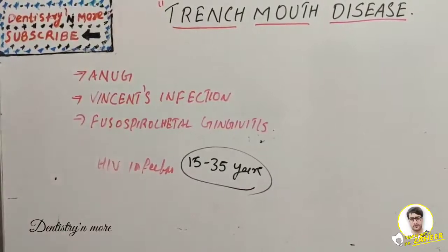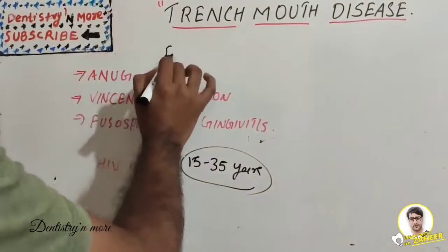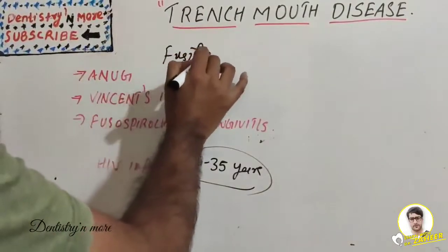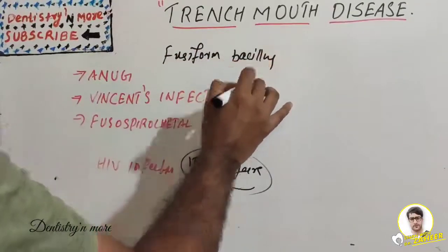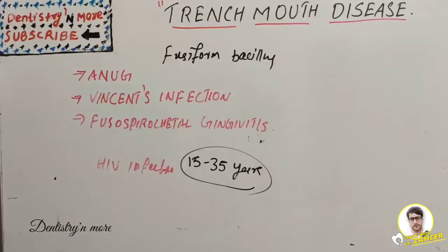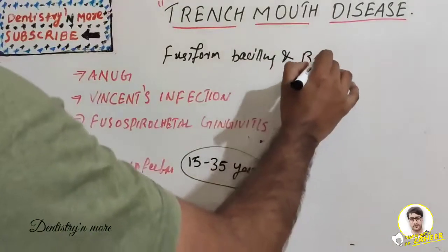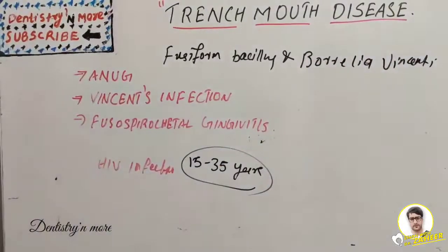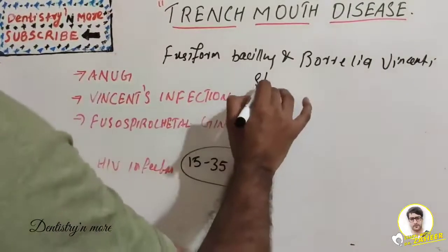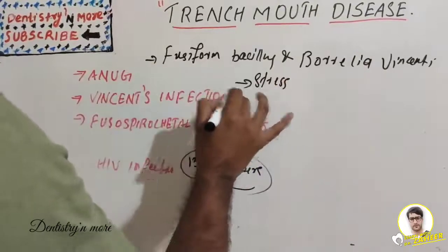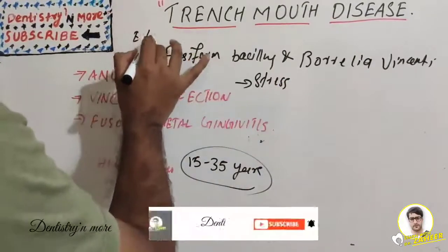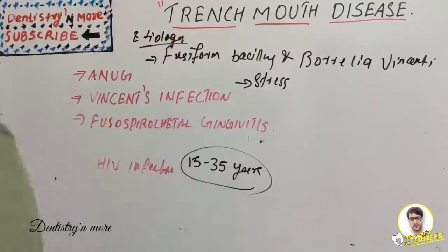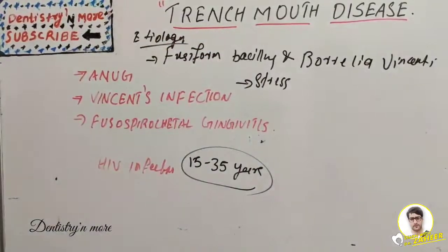Regarding the etiology of trench mouth disease, most investigators believe it is caused by fusiform bacillus bacteria and Borrelia vincenti, a spirochete. It frequently occurs in the presence of psychological stress.